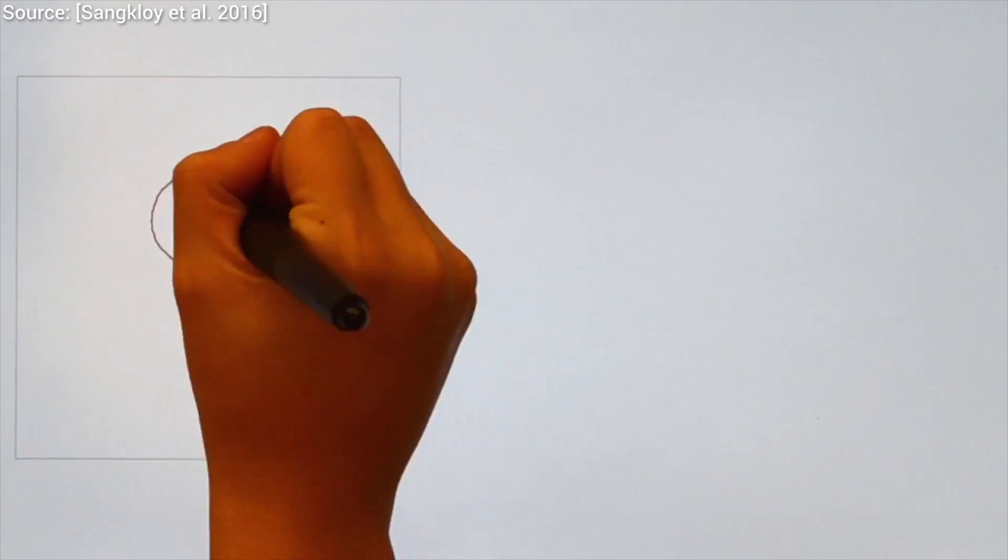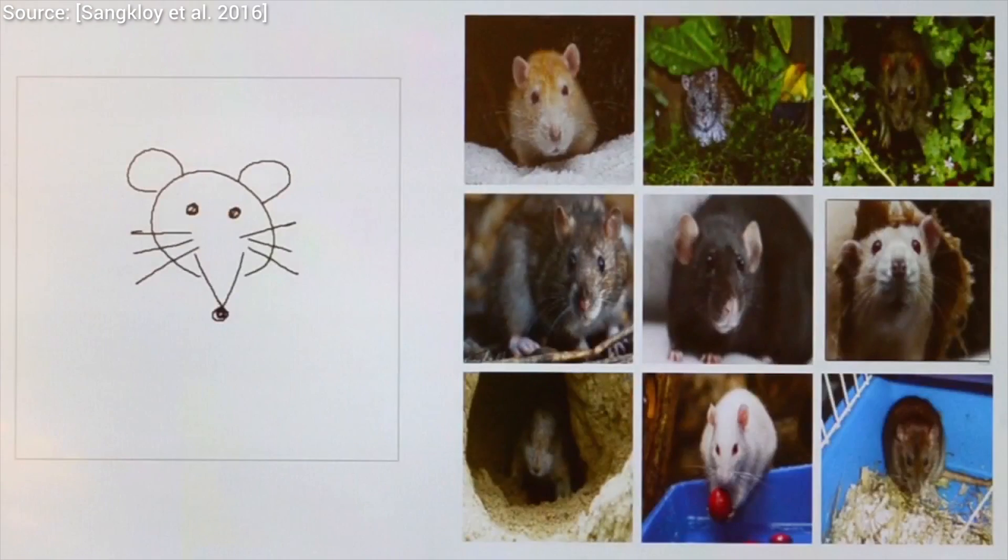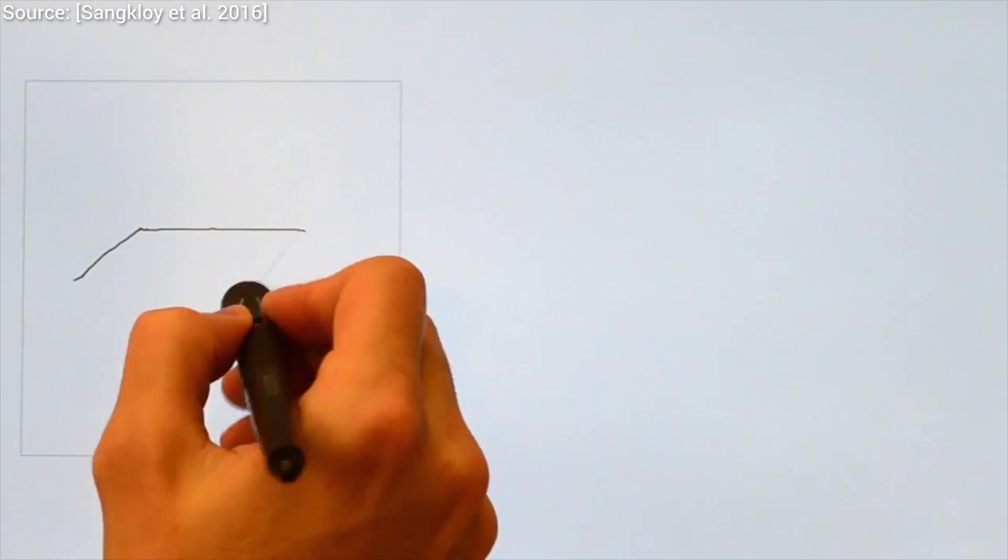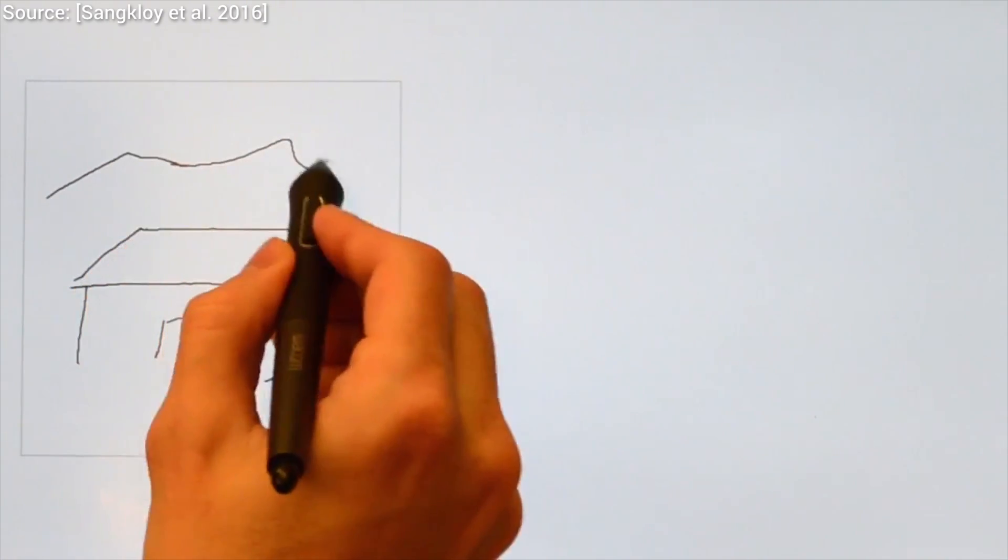Later, triplet networks were used to provide the relation of multiple pairs, like this sketch is closer to this photo than this other one. There is one more technique referred to in the paper that they used, which is quite a delightful read. Make sure to have a look.